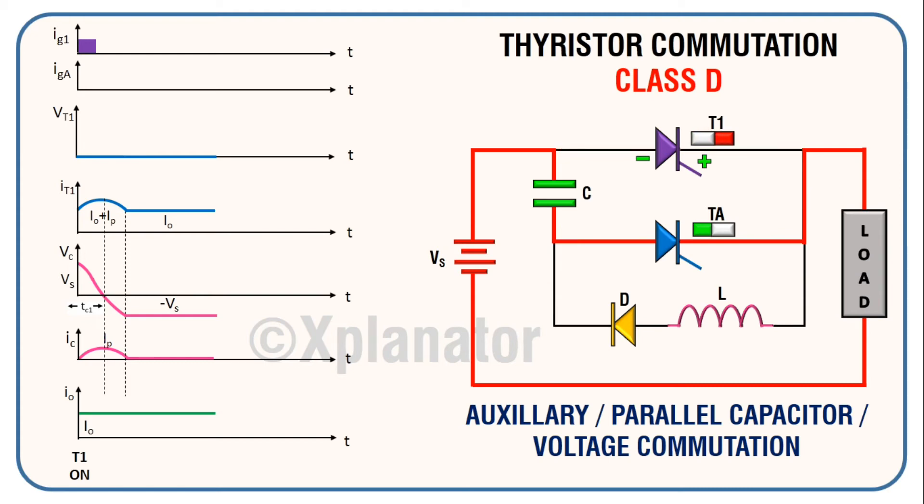Capacitor gets discharged and then it recharges to voltage VS. The load current is unaffected till now. When capacitor voltage equals battery voltage, current in the circuit dies to zero and thyristor TA is turned off. The capacitor holds on to its voltage of VS.